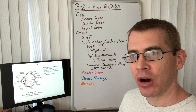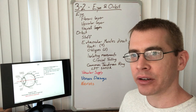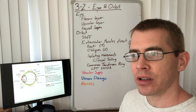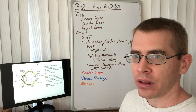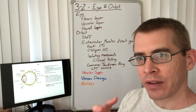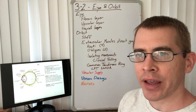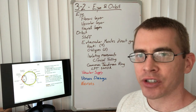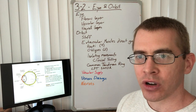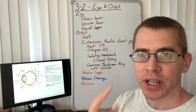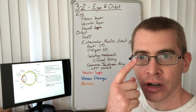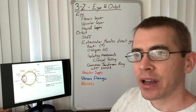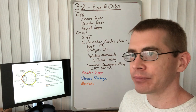The eye is composed of three different layers. The first is the fibrous layer. The sclera of the eye — the whites of your eye — is part of this fibrous layer, and the sclera is continuous with the cornea, which is the anterior clear part through which you can see your iris and the lens.